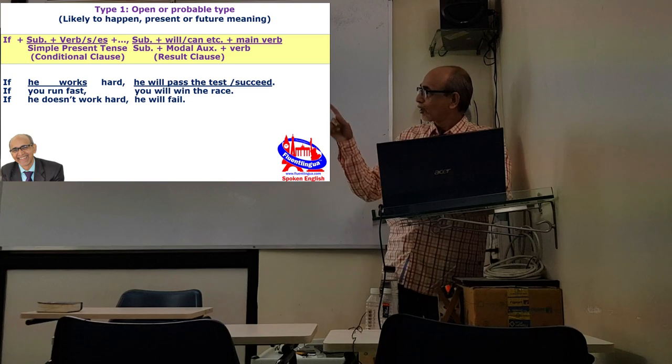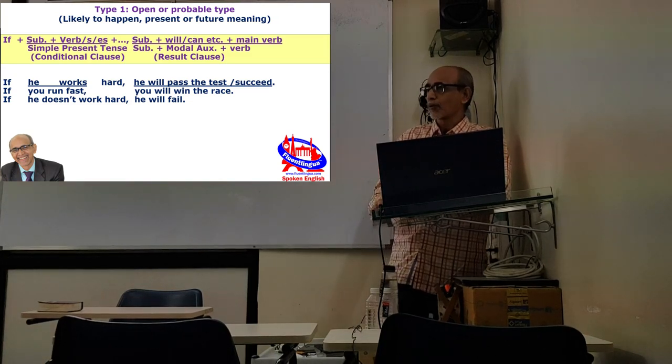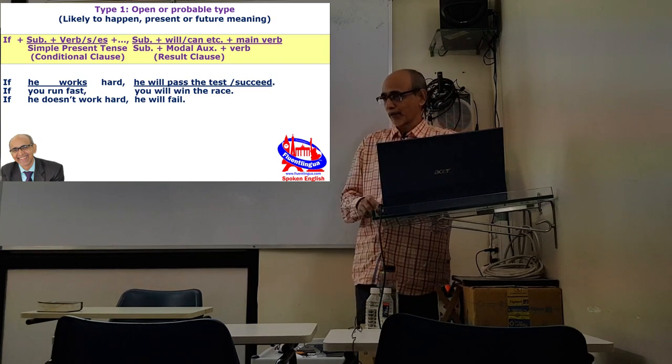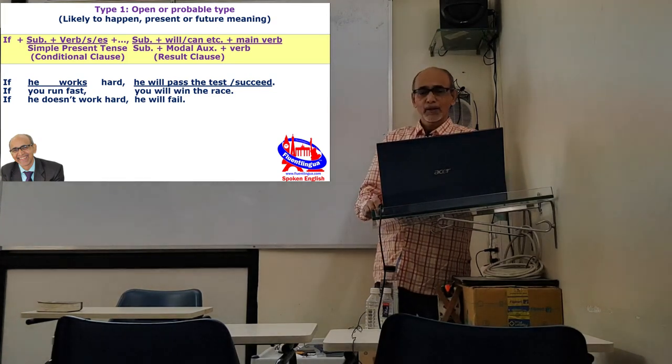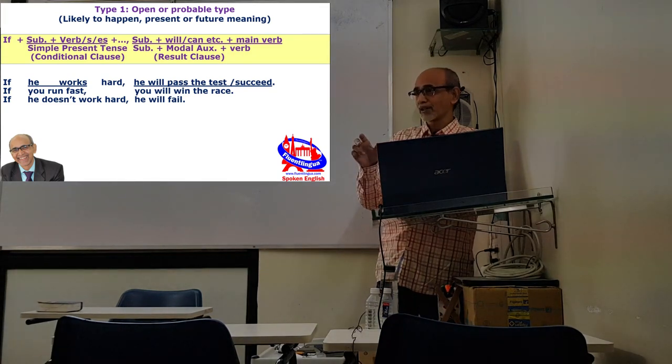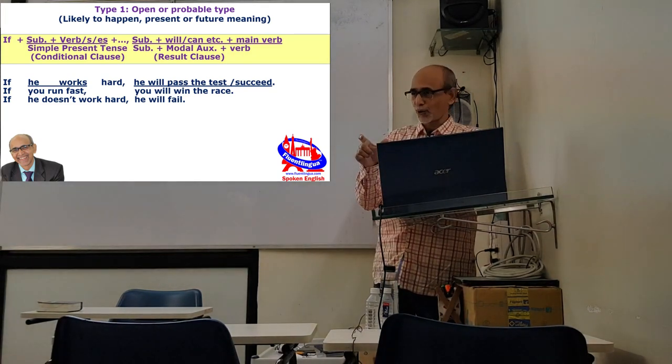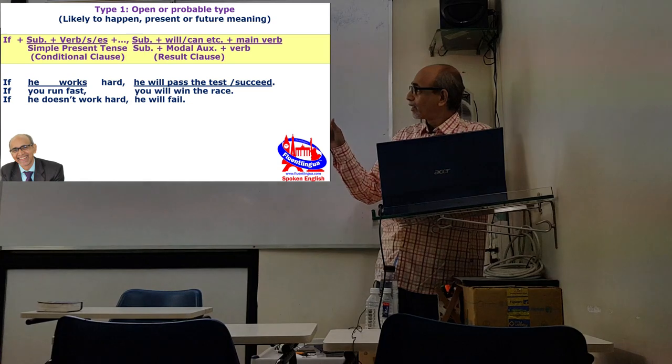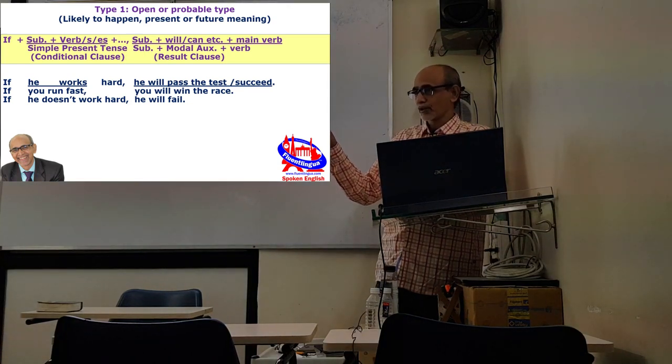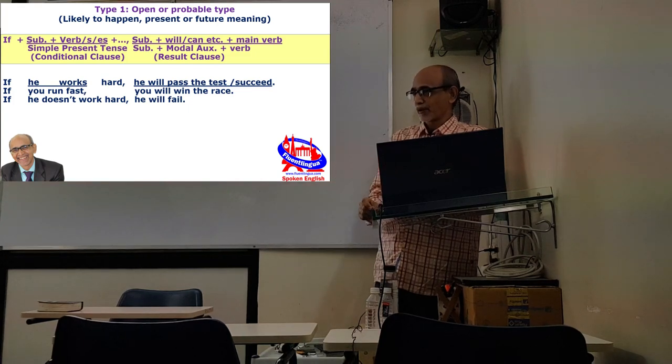The first is called type 1, open or probable condition. That means something is likely to happen, and for that condition we use the simple present tense in the conditional clause and will or can or any such modal auxiliary according to the meaning in mind and then the main verb.